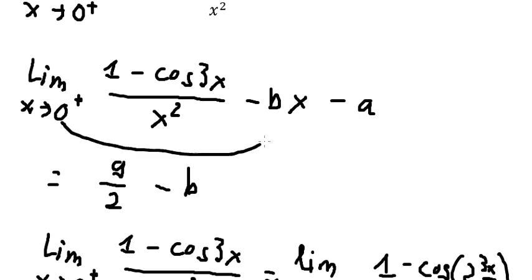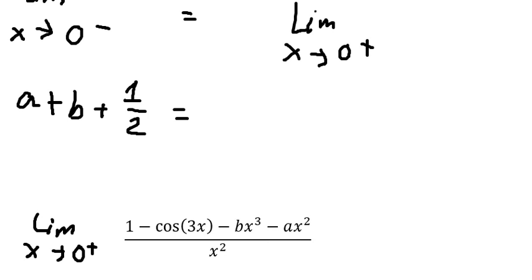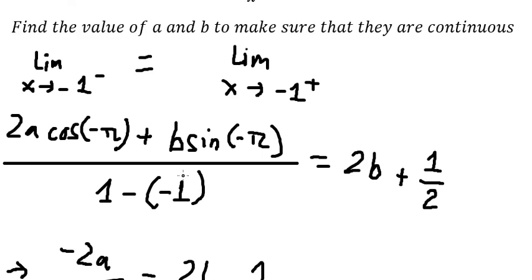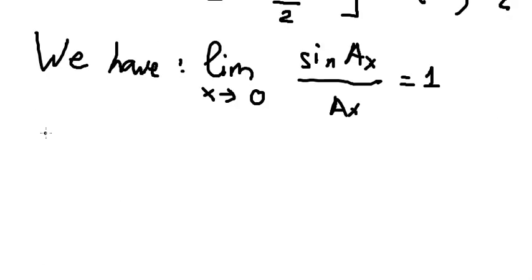Because if we put x approaching zero, the bx and A terms: the bx term goes to zero, so we just have negative A. After calculating, the limit equals 9 over 2 divided by negative A. We rearrange: put negative A to the left and 1 over 2 to the right, giving 2a plus b equals 9 over 2 minus 1 over 2, which equals 4. This is equation number 2. Now we have equation 1 and equation 2, creating a system of equations.